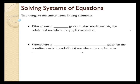So let's talk about finding the solutions. There's really two things to remember here. This first bullet point: when there's one graph on the coordinate axis, the solution or solutions are where the graph crosses the x-axis. So if you're looking at a graph and there's one parabola, one quadratic function, one exponential function, a linear function — whatever it is — the solutions, or the roots, the zeros, are where the graph crosses the x-axis.